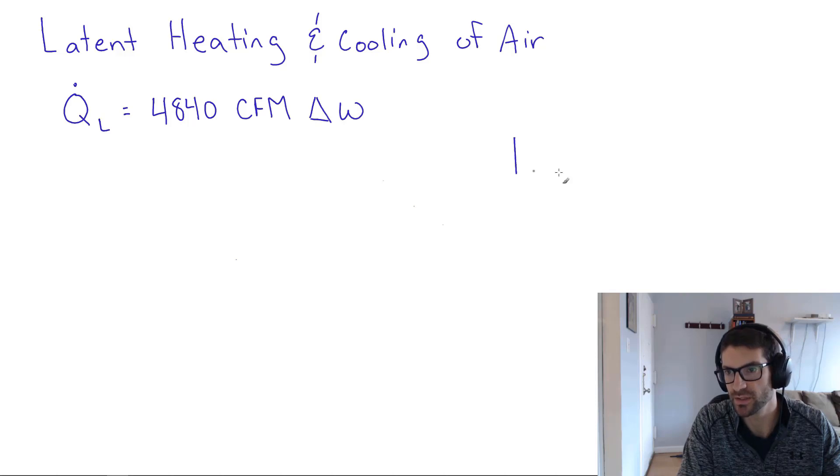So if we think about our psychrometric chart, we're talking about that vertical axis over on the right side, this is the humidity ratio here. So if we're going vertically up or down from state one to state two, if we're going from one to two, that would be latent cooling. If we're going from two to one, that would be latent heating.